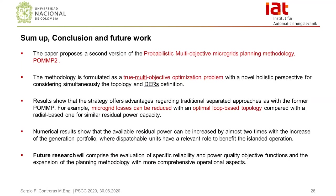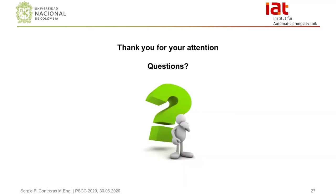To sum up and conclude, this paper proposes a second version of the probabilistic multi-objective microgrid planning methodology, POM2. The methodology is formulated as a true multi-objective optimization problem with a holistic perspective, and the results show that the strategy offers an advantage over traditional separate approaches. Numerical results show that the available residual power can be increased by almost twice with an increased generation portfolio. For future research, the evaluation of specific reliability and power quality objective functions and expansion of the planning methodology with more comprehensive operation scenarios will be addressed.